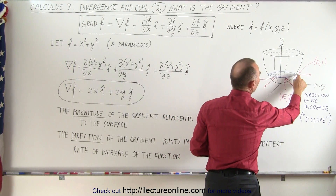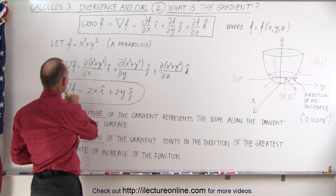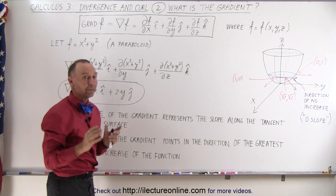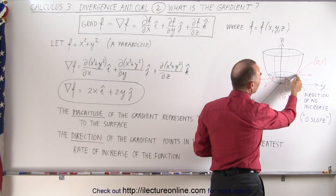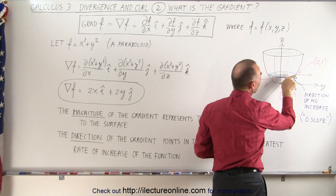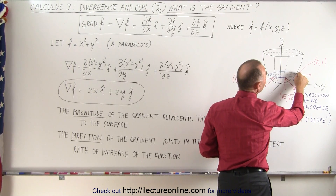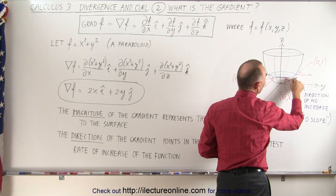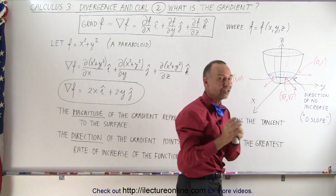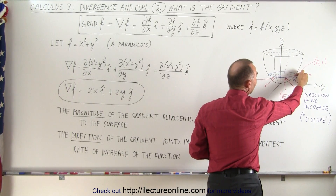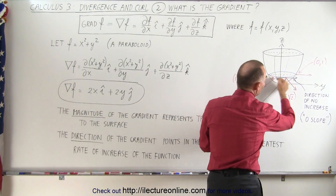Now let's go to the point where x equals 0 and y equals 1. When x equals 0 the i-component is 0, and when y equals 1 the gradient of f equals 2 in the j-direction. The magnitude is 2, which represents the slope along the tangent line. If y increases in that direction, that's the direction of maximum change in the slope. Moving 90 degrees from that, the slope change is 0 because the slope equals 2 anywhere along that circular path.